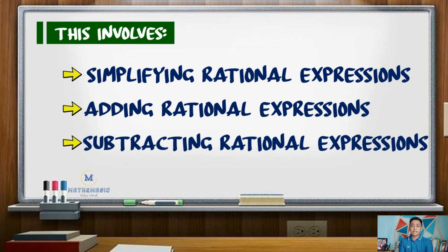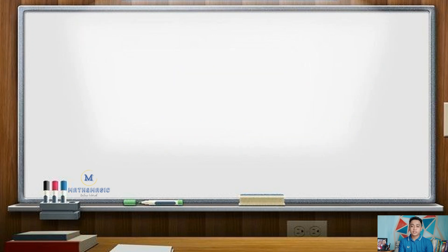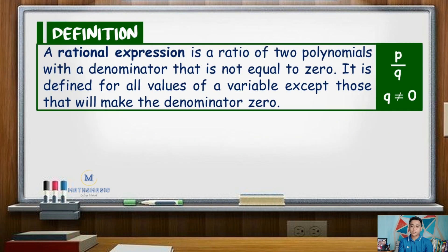By definition, a rational expression is a ratio of two polynomials with a denominator that is not equal to zero. It is defined for all values of the variable except those that will make the denominator zero.